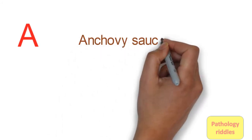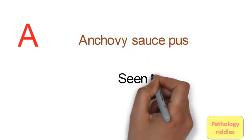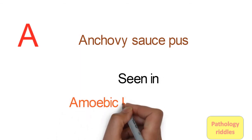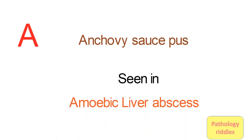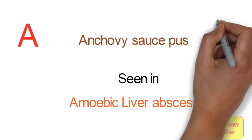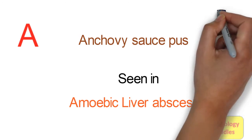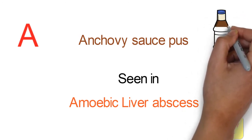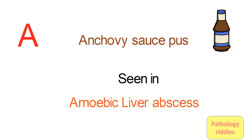We start with A. A for Anchovy sauce pus. Anchovy sauce pus is seen in patients who have amoebic liver abscess. When the pus is drained out of them, we see a brownish colored sauce-like material which resembles Anchovy sauce. Hence the name.